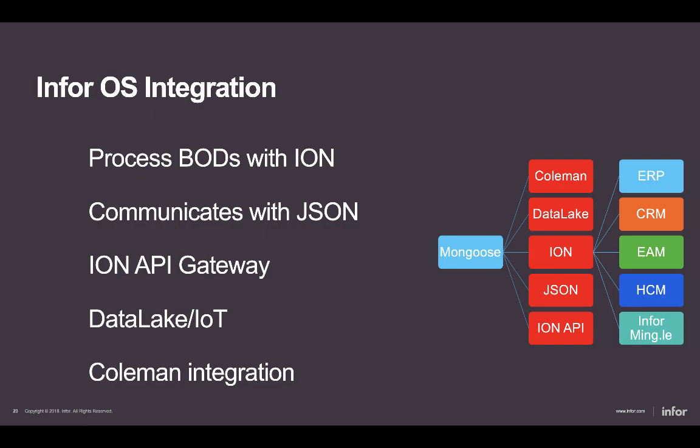Our Infor OS integration allows us to process BODs with Ion using our built-in replication functionality. The XML to IDO capability allows you to build BOD-capable functionality inside Mongoose very easily. For in-context web parts, we communicate with JSON messaging. We are Ion API compliant today and building wizards to simplify building on top of our mid-tier via Ion API. We can also take advantage of Data Lake, Internet of Things, and we're now working on Coleman integrations with our digital assistant capabilities — all leading us into the future.